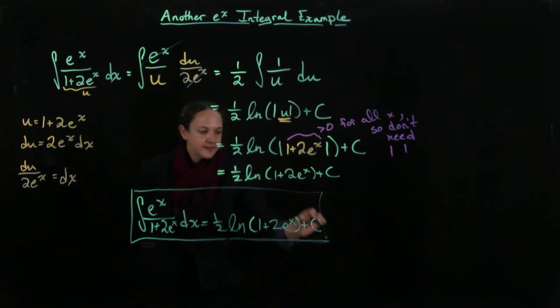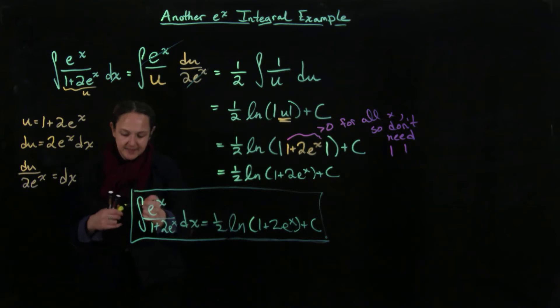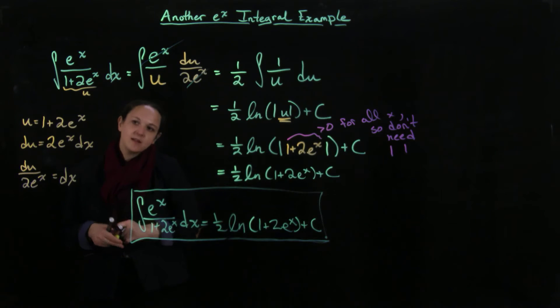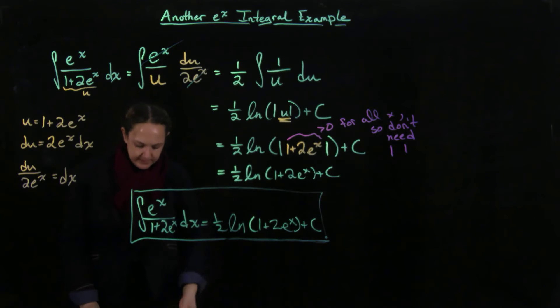And the other tricky thing being that we did have to switch back to be in terms of x because we didn't have bounds. And our original integral was in terms of x.